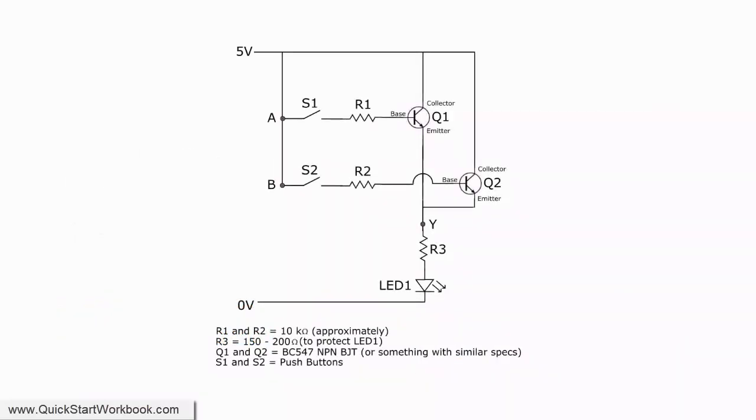Here is a schematic diagram for the logic gate. If either switch S1 or S2 is closed, the corresponding transistor Q1 or Q2 is switched on. This enables current to flow around the circuit to illuminate the LED.